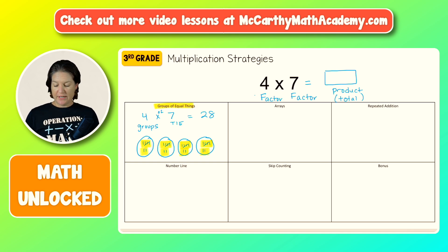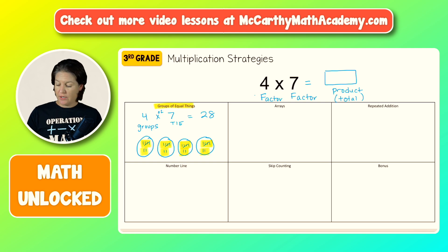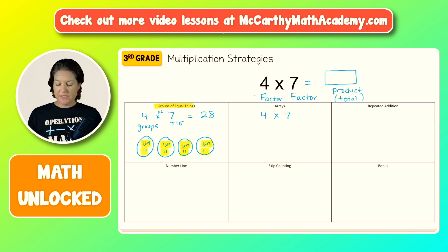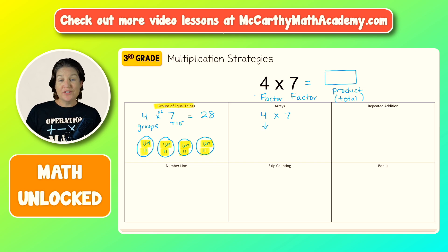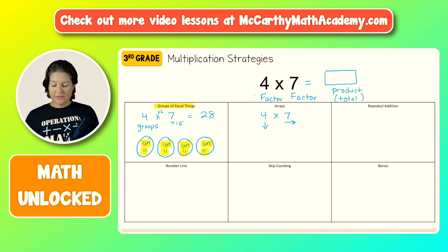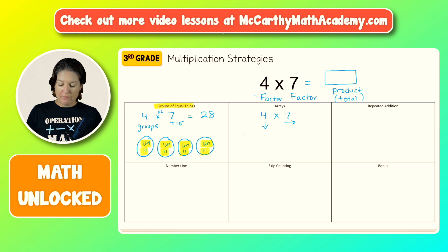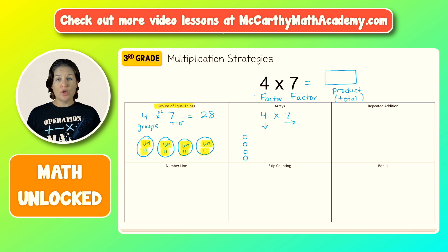Another way, moving on to the next box, would be using arrays. So let's write our expression again: four times seven. For arrays, our first factor is the number of rows going down, and our second factor is the number going across. So we're going to have one, two, three, four rows going down.